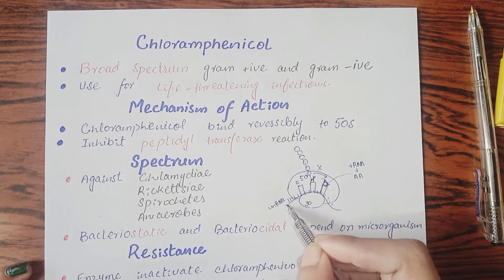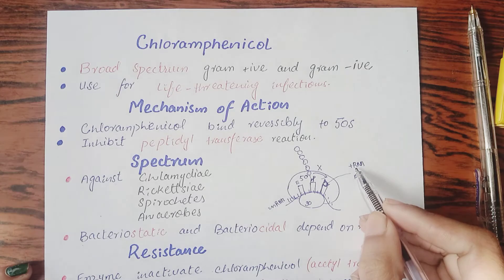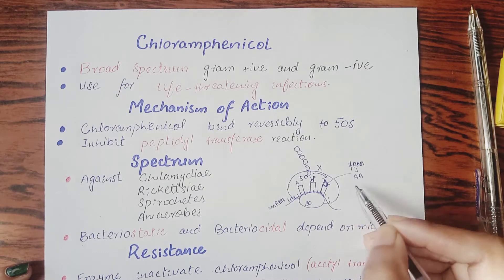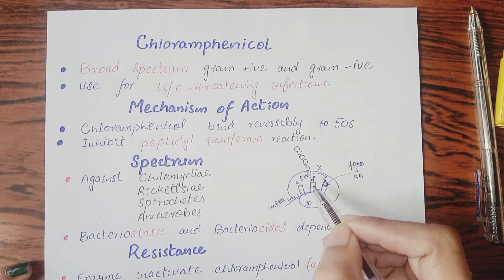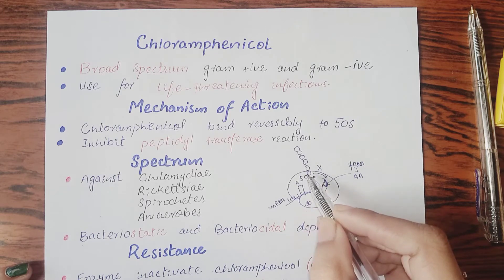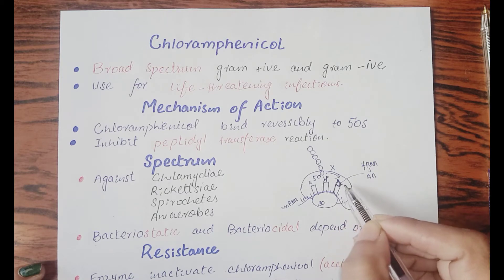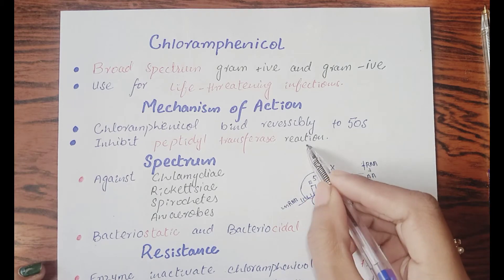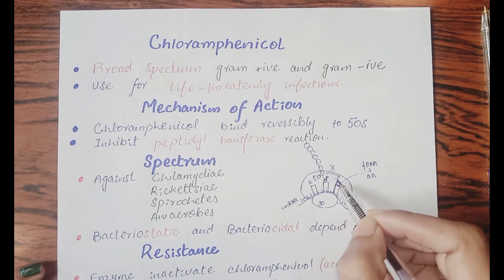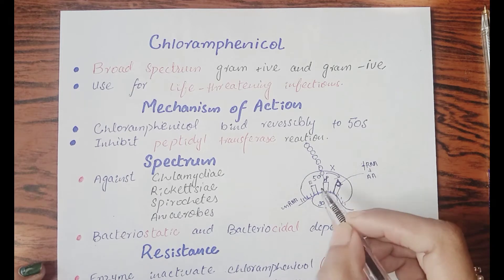The messenger RNA has different codons that the ribosome reads. A tRNA always comes with an amino acid and binds at the A site. There is already a peptide chain on the P site. This peptide chain transfers from the P site to the A site, where it attaches to the newly bound amino acid and then moves back to the P site, adding one more amino acid to the chain.